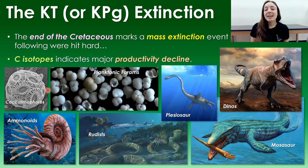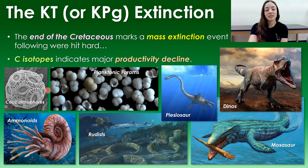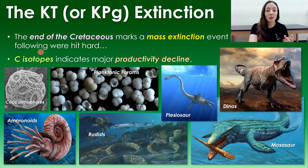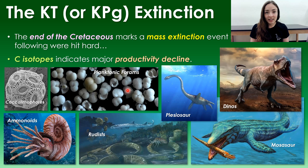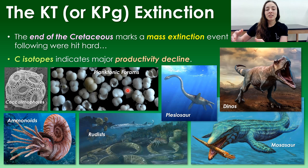Cocolithophores — those little nano algae that made the major chalk deposits in the Cretaceous that gave the Cretaceous its name — declined greatly, and carbon isotope evidence in the rock record indicates a major productivity decline during this time. Planktonic forams, after having major success in the Cretaceous, majorly declined during this extinction event and only a few species survived, then started to dominate again in the Cenozoic era.